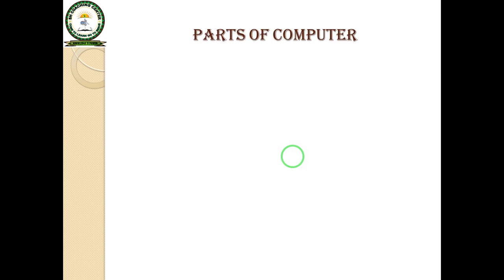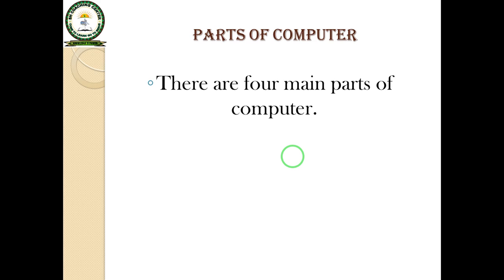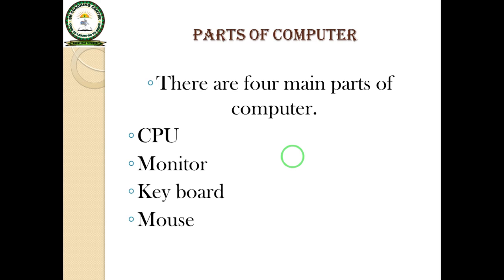Parts of computer. There are four main parts of computer. The first one is CPU, the second is monitor, the third is keyboard, and the fourth is mouse.